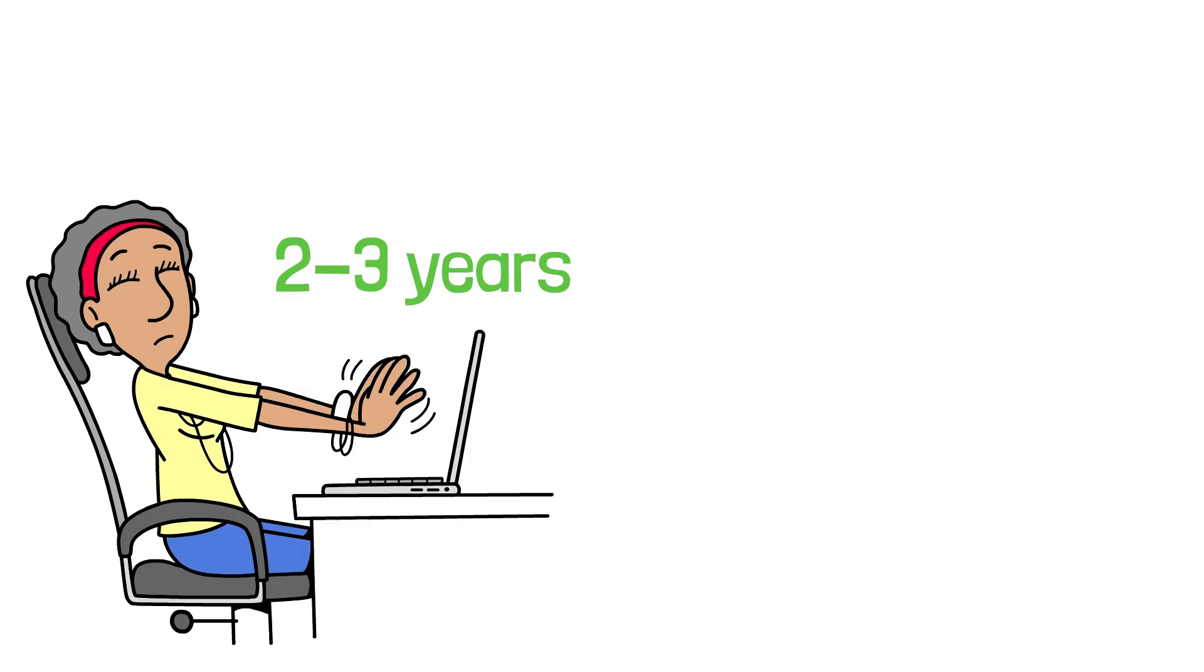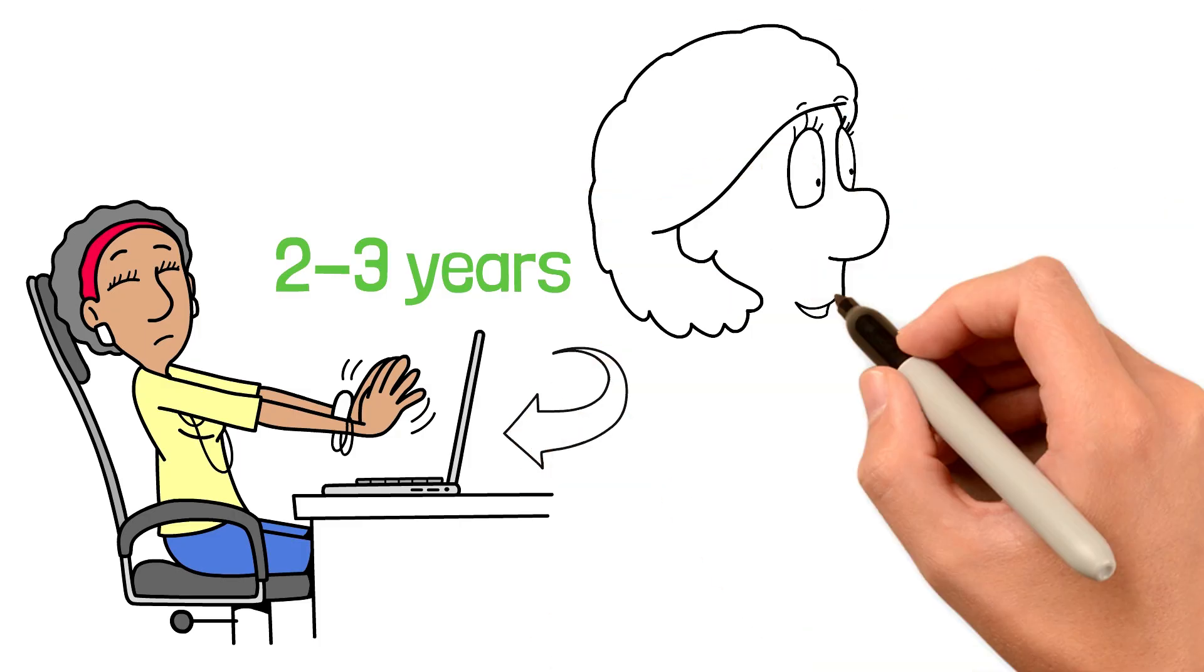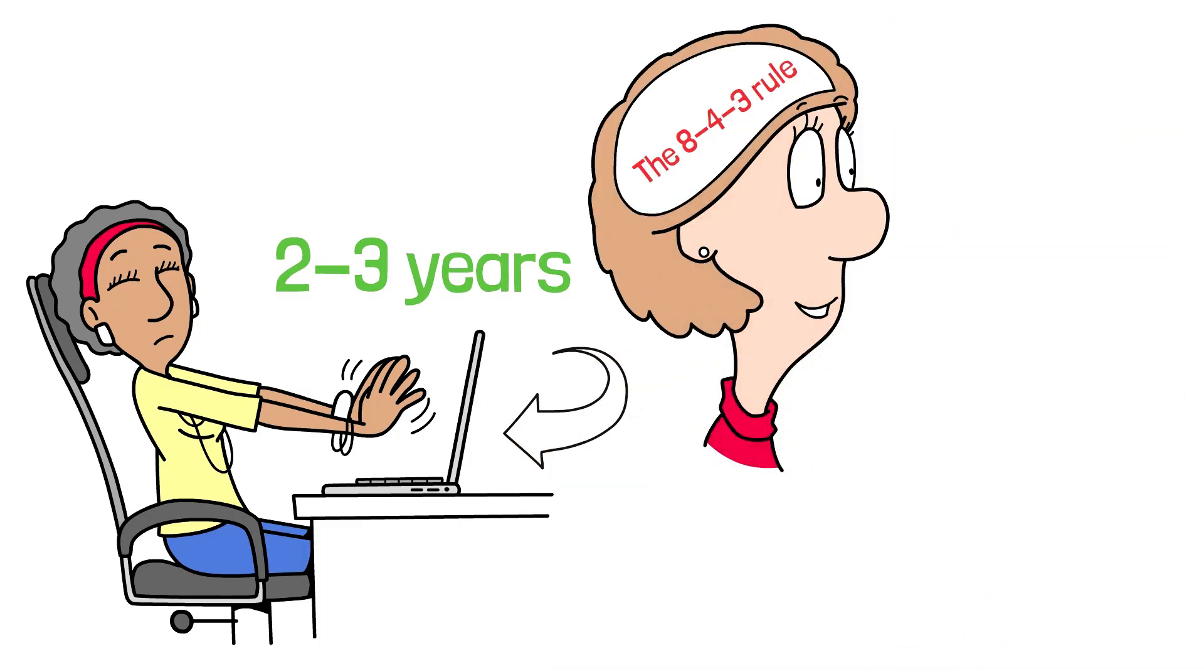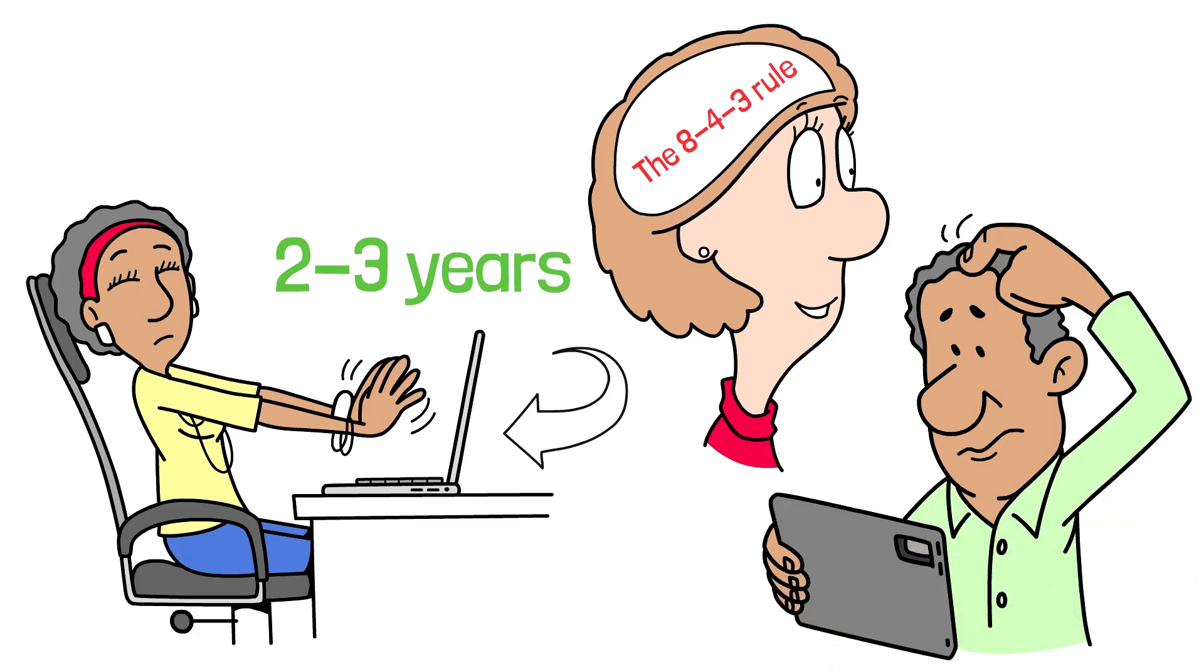Most people aren't. They quit after 2 to 3 years because they don't see dramatic results. But you're not most people. You now understand the 8-4-3 rule. And you know that the slow start is exactly what's supposed to happen.